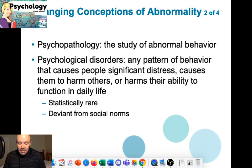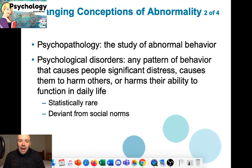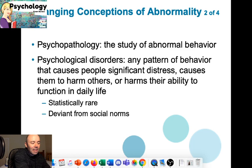There's an acronym I like students to think about for abnormality - DDIC: Dysfunction, Distress, Impairment, and Culture or Context. That last C covers two ideas. So DDIC - dysfunction, distress, impairment, culture or context.